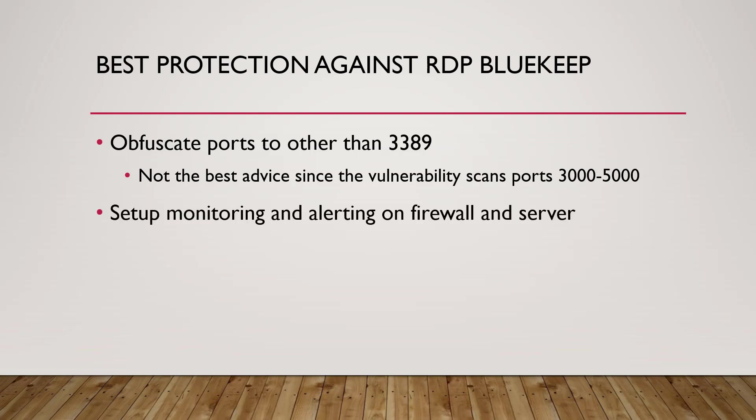You can also set up monitoring and alerting on your firewall and server. This is a good idea to notify you when a certain amount of packets are trying to get through on ports 3000 through 5000, so you know to block whatever IP address or IP block is coming after your firewall and servers. Setting this up on a firewall is pretty simple and automatically built in.